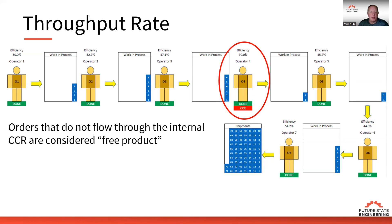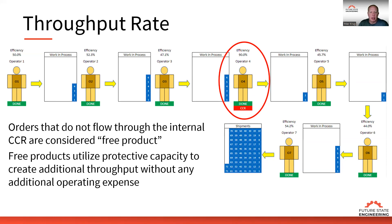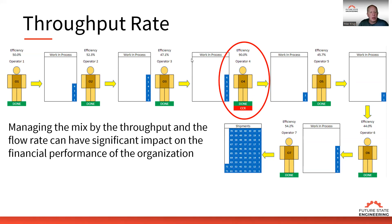Orders that don't flow through the capacity constraint resource are considered free products. Free product means it utilizes our protective capacity of other resources to create additional throughput without any additional expense. We can look at each order and understand whether it goes through our capacity constraint resource or not — if it doesn't, we consider it free product and we can use our protective capacity to fulfill it.